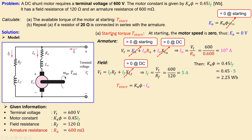In general, the torque is the armature current times the motor constant. For the starting torque we use the starting armature current of 1000 amperes and the motor constant of 2.25 weber. Substituting the values gives a starting torque of 2250 newton-meters. That is the answer for question A.